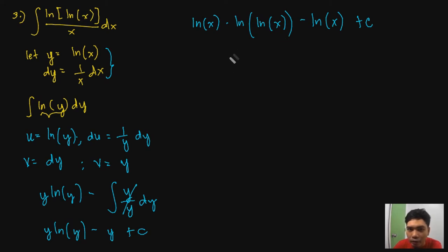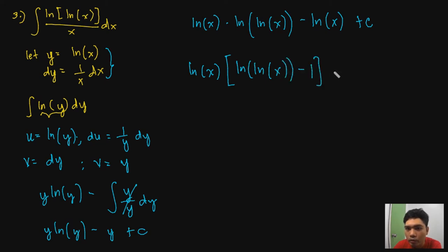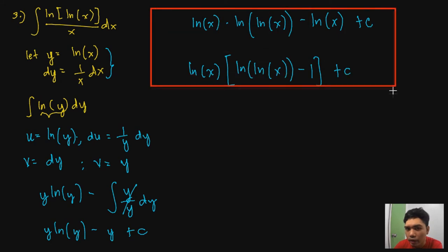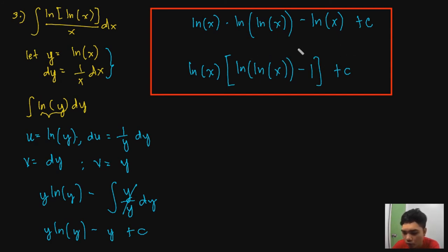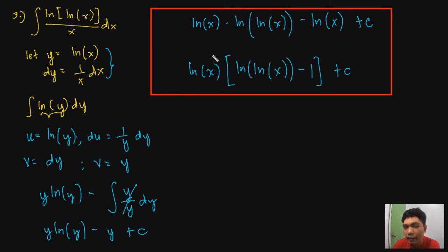Substituting back, since y = ln(x): the final answer is ln(x)·ln(ln(x)) − ln(x) + C. This can also be factored as ln(x)·[ln(ln(x)) − 1] + C. Both forms are correct — the module shows the first form, but either is acceptable.